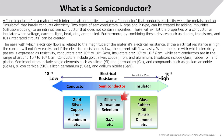Two types of semiconductors, n-type and p-type, can be created by adding impurities (diffusion/doping) to an intrinsic semiconductor that does not contain impurities. These will exhibit the properties of a conductor or insulator when voltage, current, light, heat, etc. are applied. By combining these, devices such as diodes, transistors, and ICs (integrated circuits) can be created.